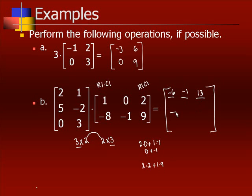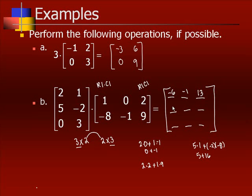Remember, we're looking for a 3 by 3 result. For the second row: row 2 times column 1 gives us 5 and negative 2 times 1 and negative 8. So that's 5 times 1 plus negative 2 times negative 8, which is 5 plus 16, giving us 21. Row 2 times column 2: 5 times 0 plus negative 2 times negative 1, which is 0 plus 2, giving us 2.